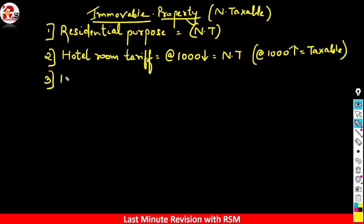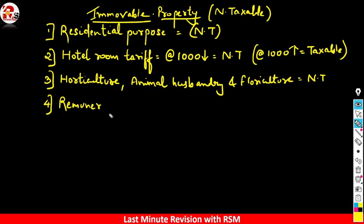उस के बाद एक point याद रखना है कि horticulture, animal husbandry and floriculture. Plants cultivation, flowers cultivation, animal husbandry, grazing of the animals - this has been purely non taxable. कभी कभी क्या होता है कि कुछ आपको question में confuse करने के लिए remuneration of member of parliament, pension received by employer ऐसे points दिए होते है तो वो भी हमारे non taxable है.